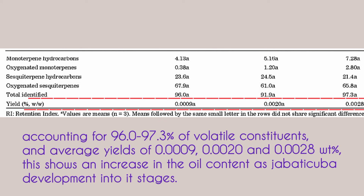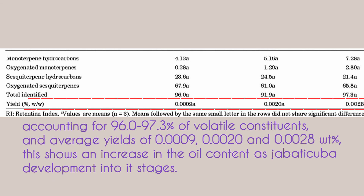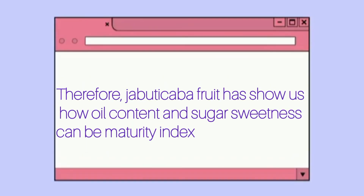This shows an increase in oil content as jabuticaba develops through its stages. Therefore, the jabuticaba fruit has shown us how oil content and sugar sweetness can serve as maturity indices.